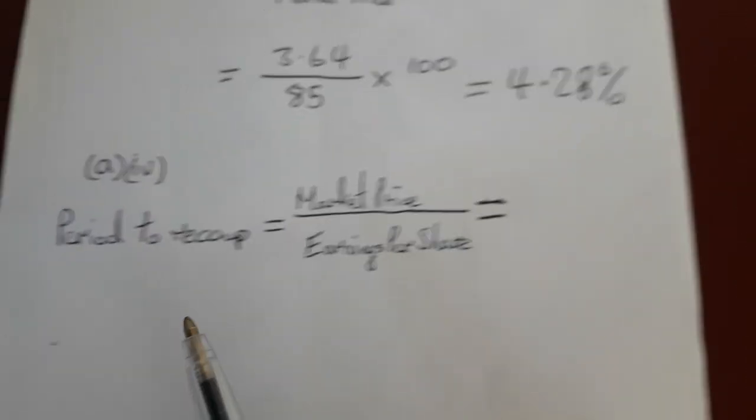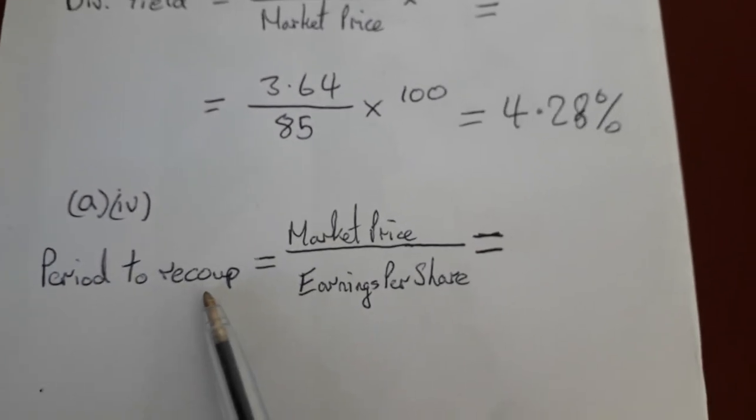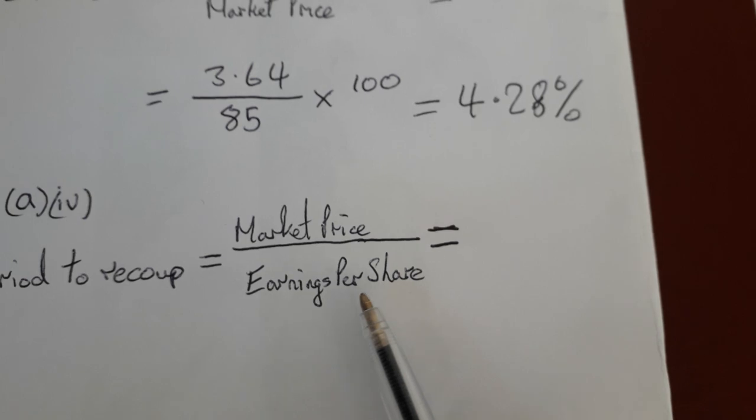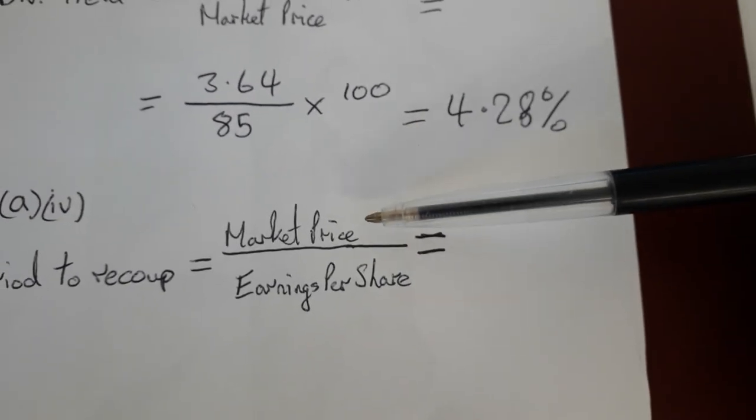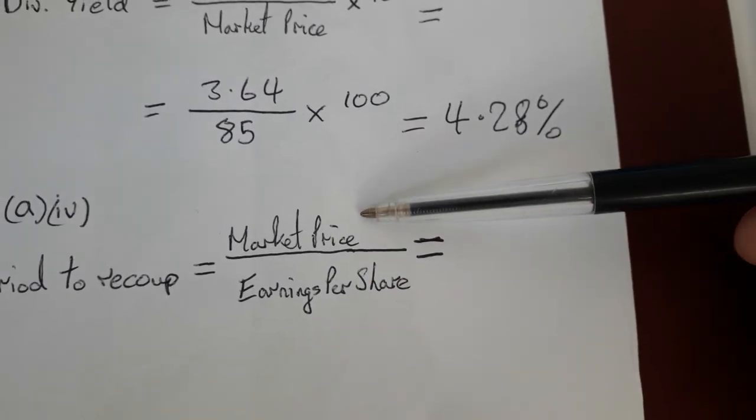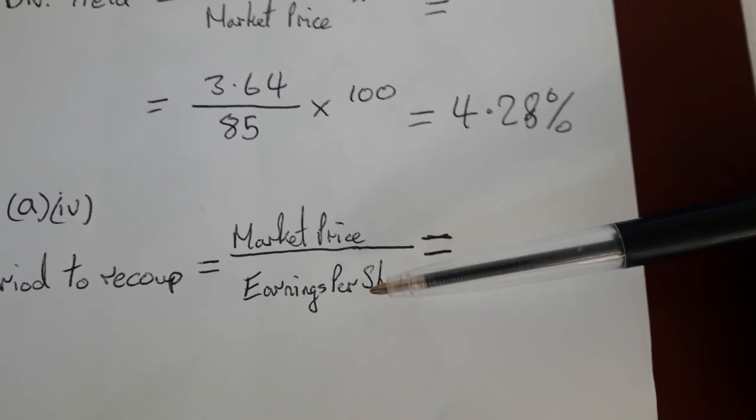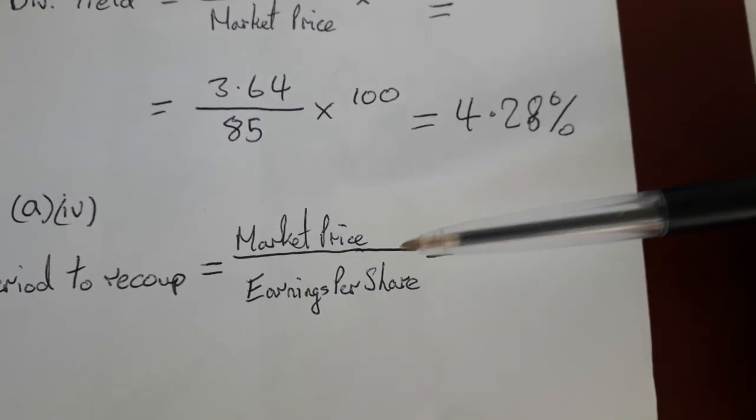Here is the period to recoup formula, and it's just the market price divided by the earnings per share. You need to make sure that these are both in the same units, so either they're both in euros or they're both in cents. It'll work as long as they're both in the same units.